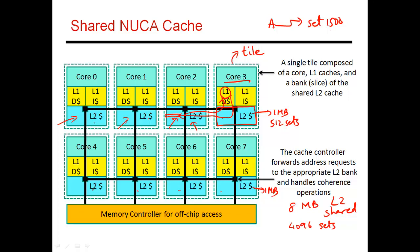Based on which tile the data is found in, the latency also changes — so this is very much a NUCA cache. If I'm lucky and find my data in my own local slice, I can get by with a 5-cycle access time. If I find my data in some really distant L2 slice, I have to pay the high cost of traversing the network to get the data back, which could be say 30 cycles. It is shared because a given core can place its data anywhere in any of these L2 banks, and the set number determines which bank it will be found in.